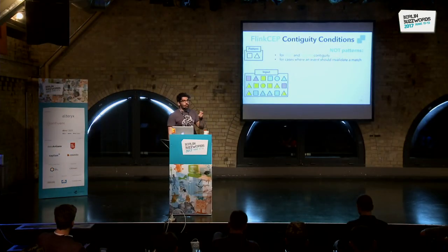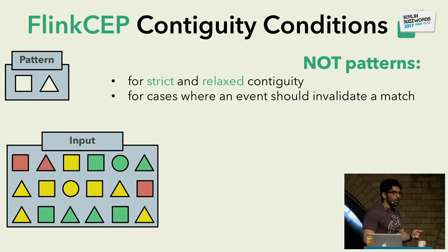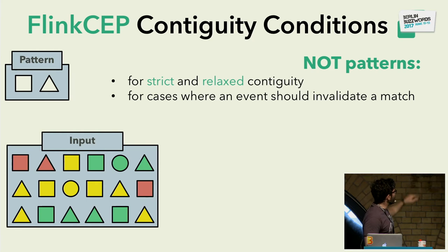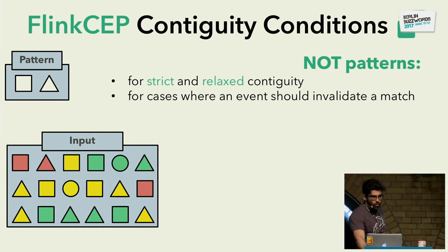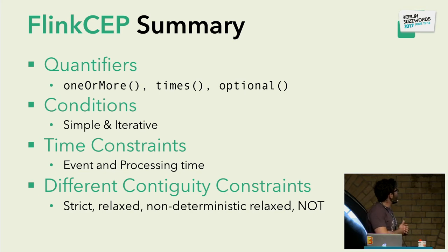An example for NOT patterns: imagine you have a shop with RFIDs on each item and want to detect shoplifters. You could specify a pattern that says: RFID read at the shelf, NOT read at the counter, then read at the exit. NOT patterns allow you to say 'event A not followed by event B, then followed by event C.' These are available for strict and relaxed continuity. They are used for cases where an event should invalidate a partial match.